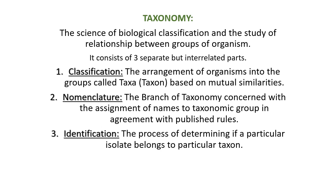Then comes nomenclature. Nomenclature is a branch of taxonomy which is concerned with the assignment of names to taxonomic groups in agreement with the published rules. For example, in the case of plants there are some rules depending on which the naming is done, and the same goes for microbial naming. So by following those rules, names are assigned to a particular taxonomic group. That is another interrelated part of taxonomy — nomenclature.